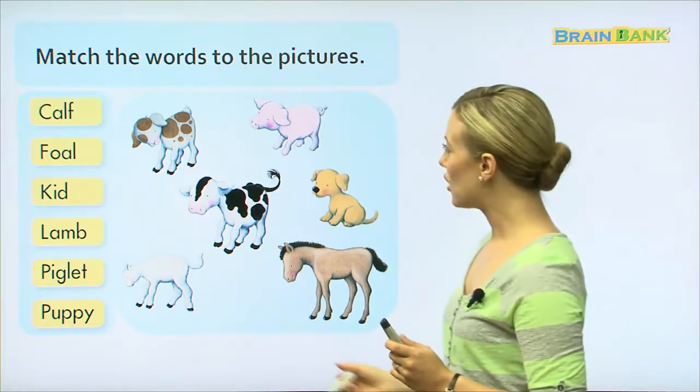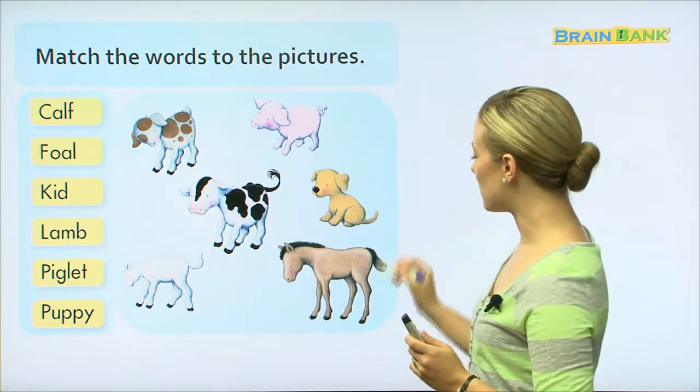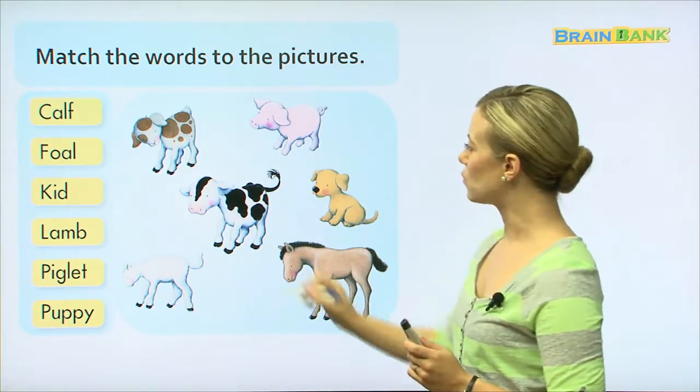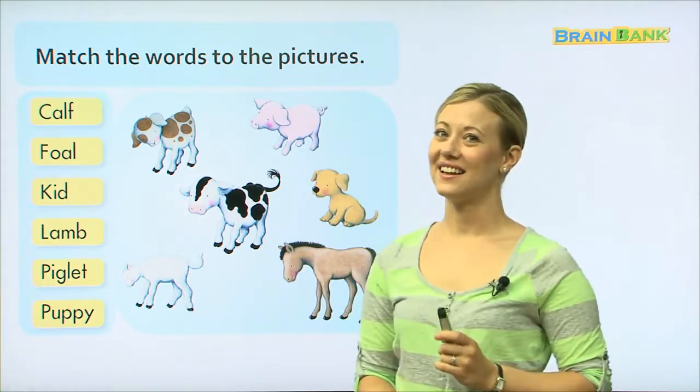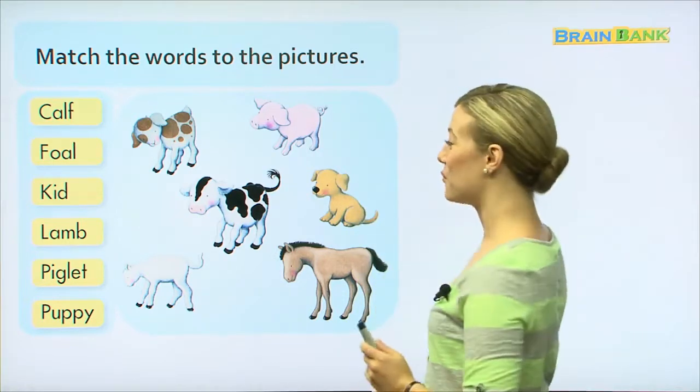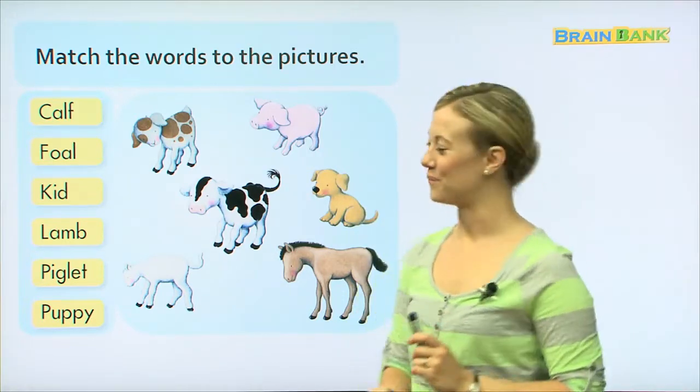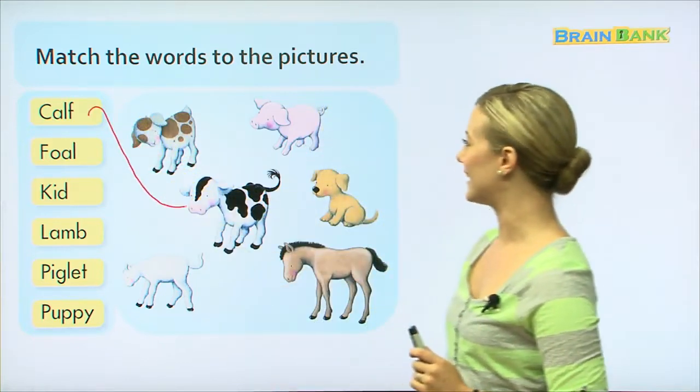See if you remember. The first word is calf. Does anyone remember which one is the calf? I'll give you a hint. A calf's mother is a cow. Which one looks like a cow? Yes, this one here in the middle. Let's draw a line.